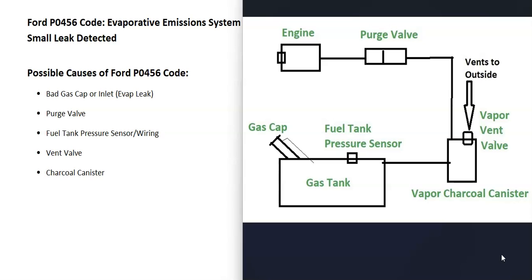Modern vehicles have what's called an EVAP system that basically takes all the gas vapors from the gas tank and feeds them back up to the engine to get burnt off so they don't escape into the atmosphere. The computer is seeing a leak inside this system, so it's going to need troubleshooting. There can be differences depending on the Ford, the year, the make, so it's always a good idea to get a diagram for your specific Ford.